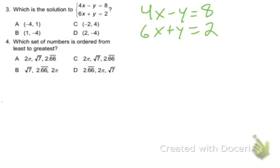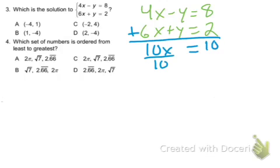You should notice that these y's are opposites, so you can simply add these equations together. So you get 10x equals 10, divide by 10, and x equals 1.